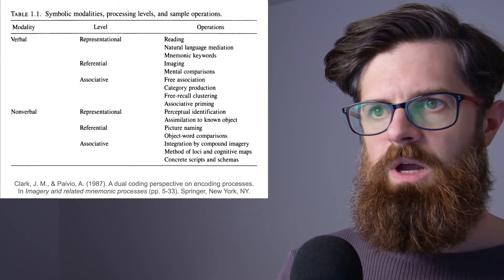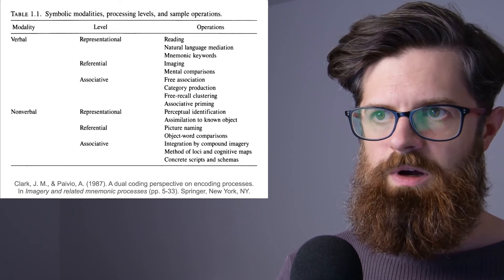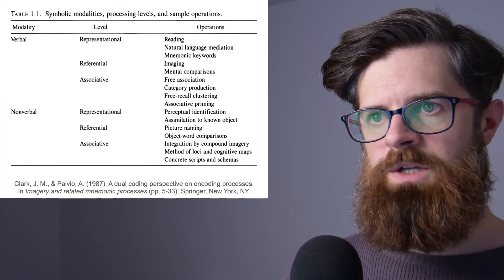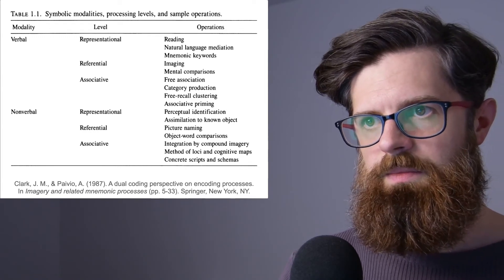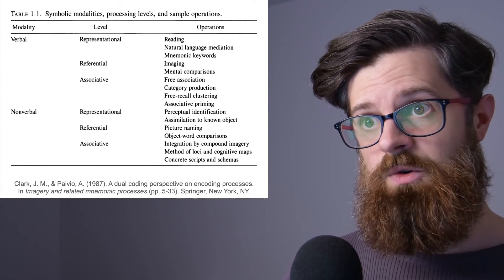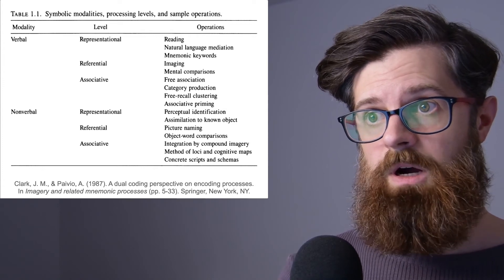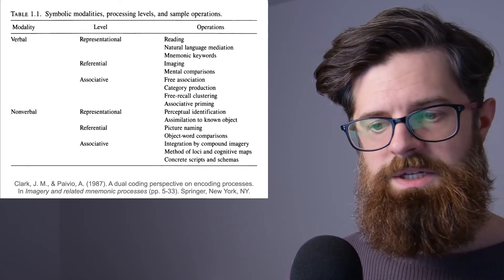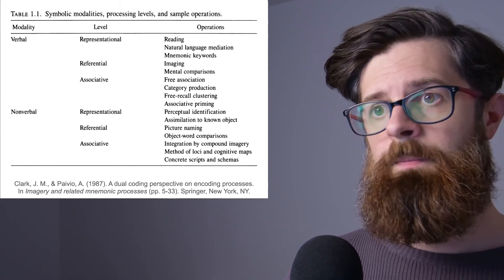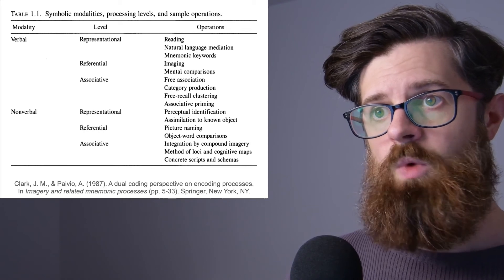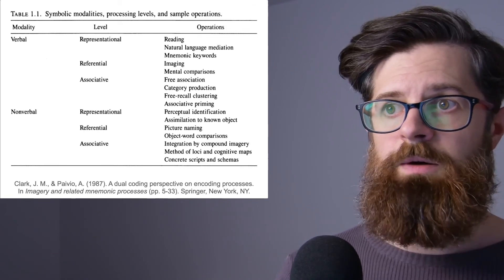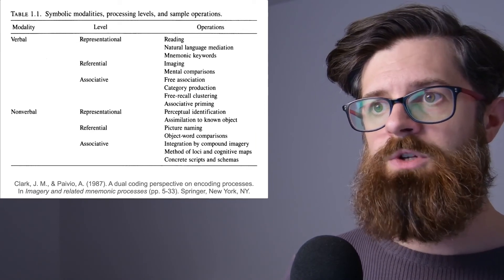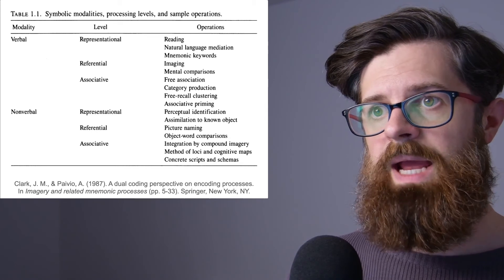You might also undergo a task of free association. So let's say that someone says a word to you like 'banana.' This through the representational connection will activate a logogen for banana. But then your task is to free associate: what are the other concepts which are associated with banana? And so under this model of dual coding, this would utilize these associative connections.